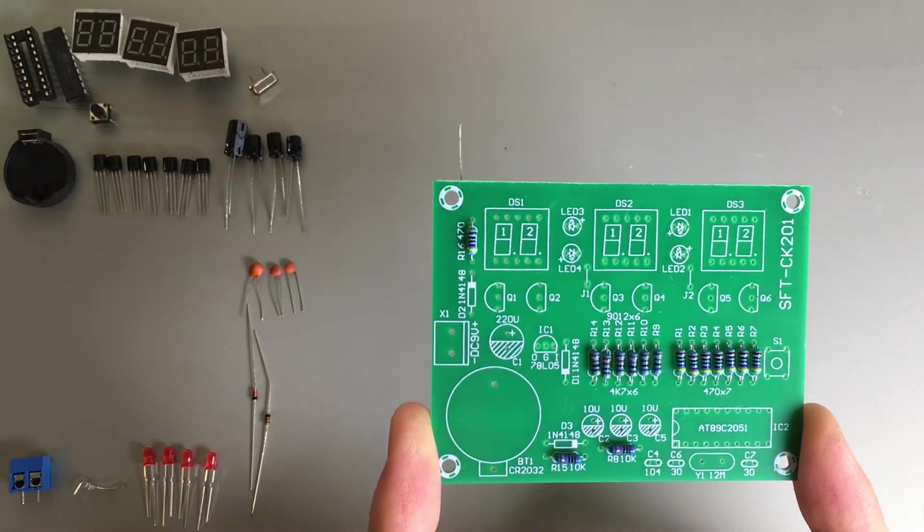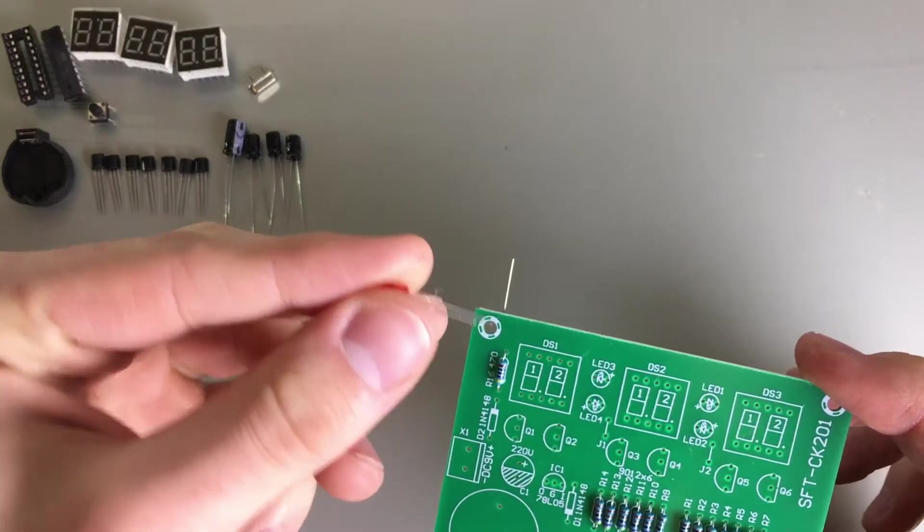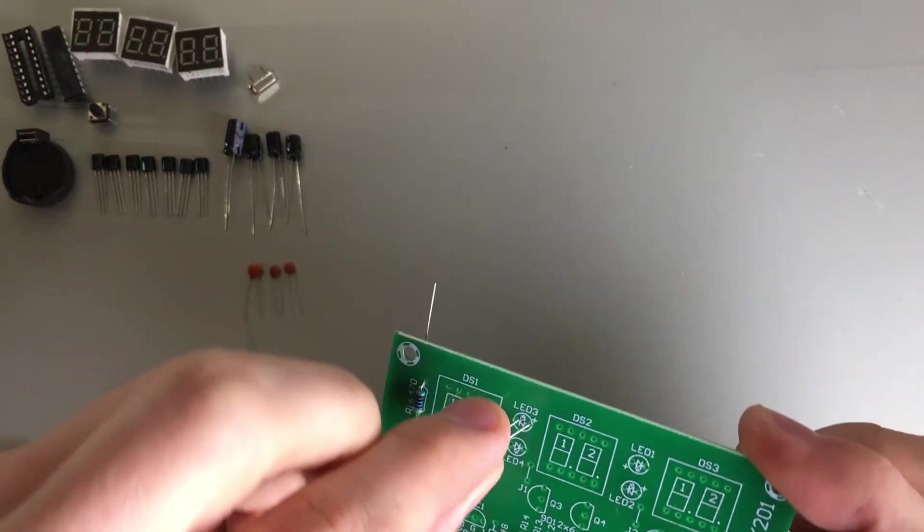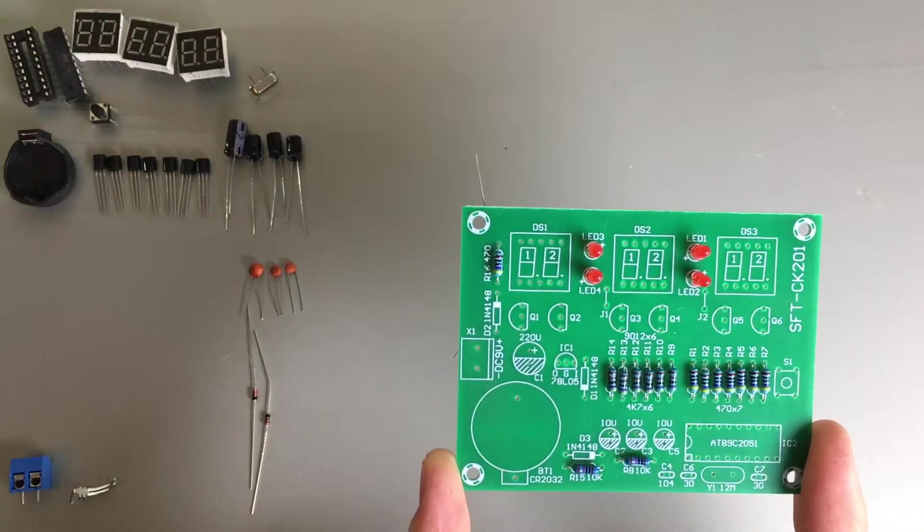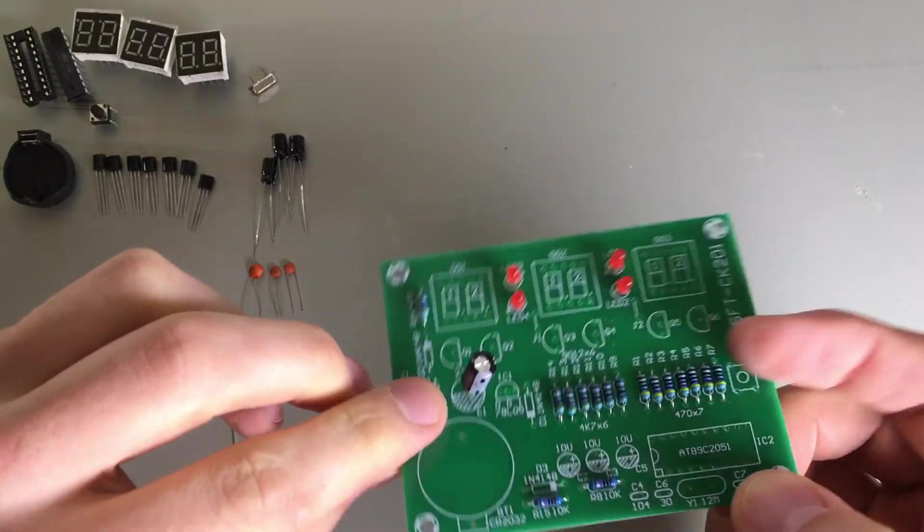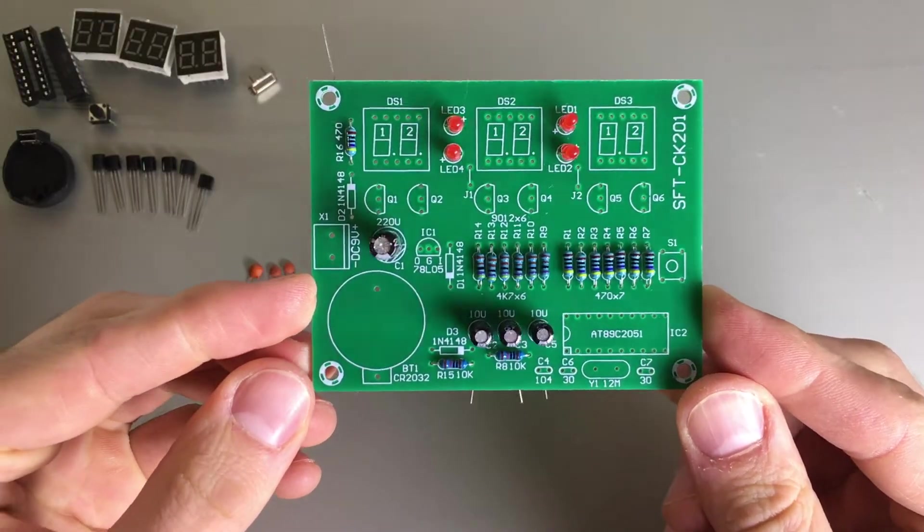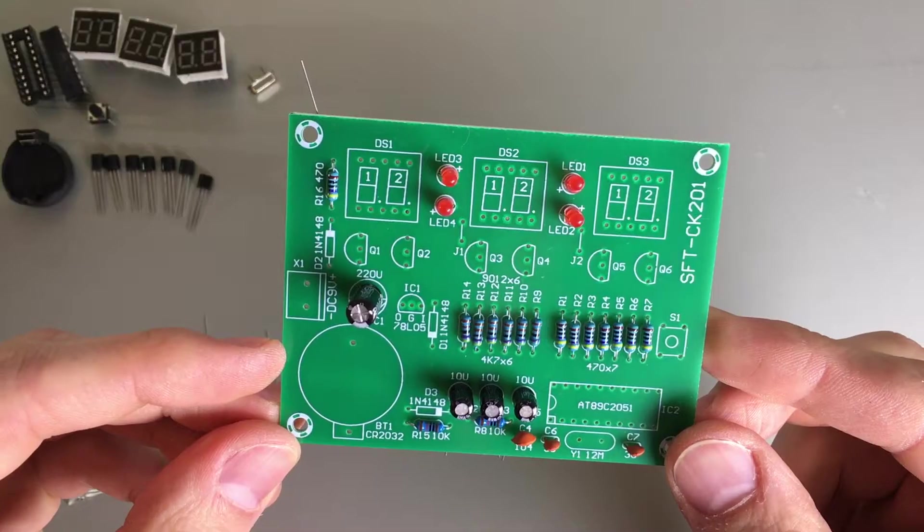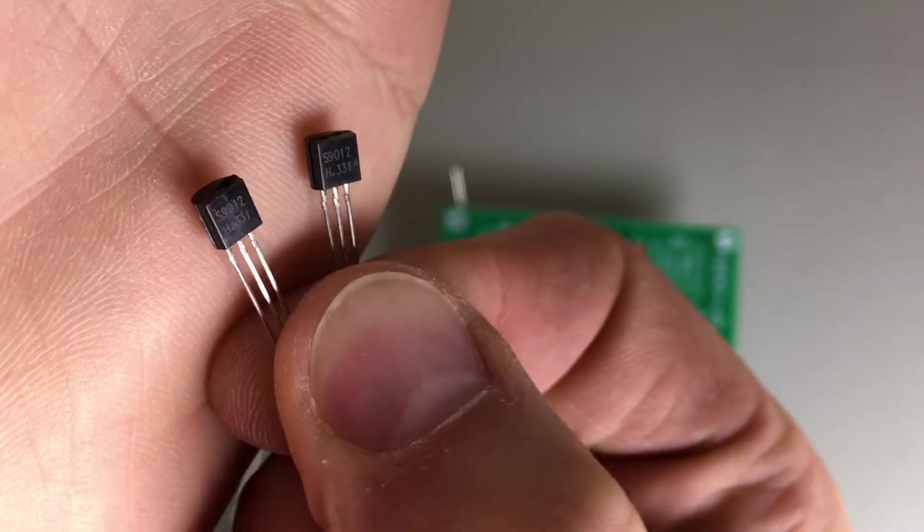The LEDs care about polarity. Be sure to insert the long legs in the hole with the tiny plus symbol. Same applies for the film capacitors. The big ribbon with the minus symbol and the shaded area on the board will help. The ceramic capacitors can be put in either way.